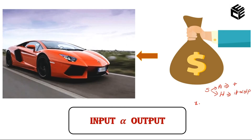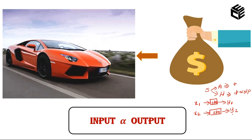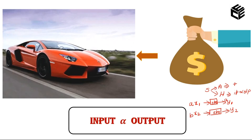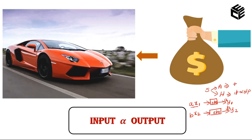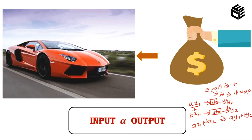Consider input x1 to system 1 giving output y1, and input x2 to another system giving output y2. Adding a weighted input 'a' gives weighted output a·y1 — this is homogeneity. Adding weighted input 'b' gives output b·y2. Now applying additivity, the inputs are added together and the output is a·y1 + b·y2. This combined property of additivity and homogeneity is the superposition principle.